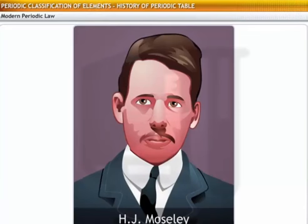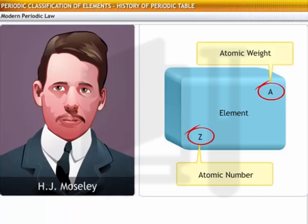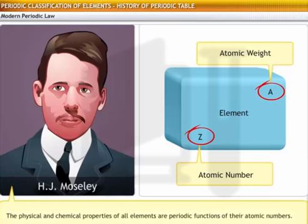H. J. Moseley, an English physicist, built further on the periodic table to resolve the problems encountered in using it. He discovered that atomic number is a better basis for classifying elements than atomic weight. On the basis of his work, he developed the modern periodic law. The modern periodic law states the physical and chemical properties of all elements are periodic functions of their atomic numbers. The modern periodic law has become the universally accepted form of classification of elements as it does not suffer from the demerits of Mendeleev's periodic table.